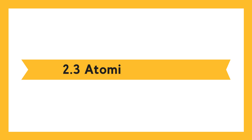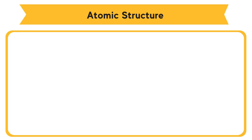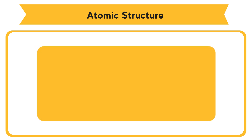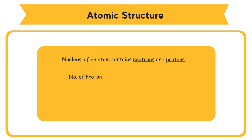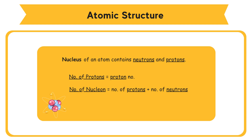2.3 Atomic Structure. Atoms of different elements have different numbers of subatomic particles. The nucleus of an atom contains neutrons and protons. The number of protons equals the proton number. The nucleon number equals the number of protons plus the number of neutrons.